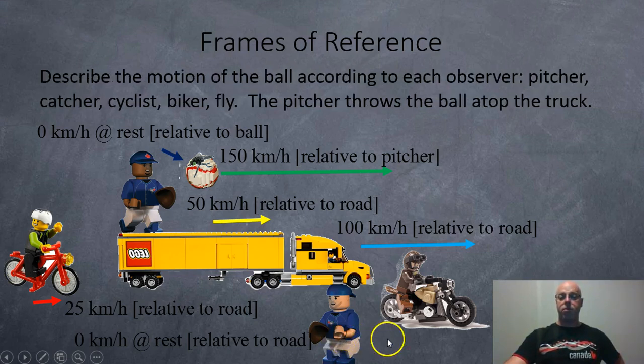So what is the velocity of the ball according to all these different observers? That's what we'd like to find out.